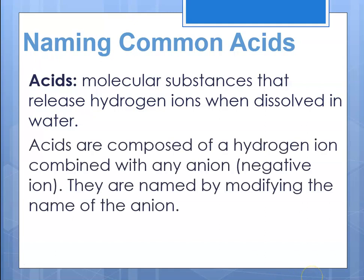They're composed of a hydrogen ion combined with some anion. Remember, anions are negatively charged ions, and acids are named by modifying the name of the anion. So it's important to be able to figure out what the name of the anion is, because if you don't know the name of the anion, you can't name the acid.